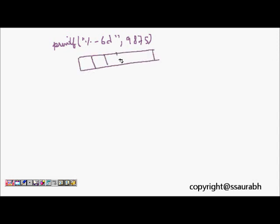So if we want the left alignment, so we have to write printf % and then minus 6d and 9875. So it will make a box equal to 1, 2, 3, 4, 5, 6, so 9, 8, 7, 5 will be enough. So this is left aligned.